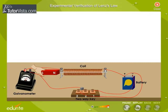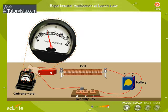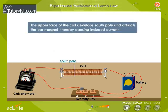Now remove the north pole of the bar magnet from the coil. The galvanometer needle moves towards the left, showing that the induced current is in the clockwise direction. In this case, the upper face of the coil develops a south pole and attracts the bar magnet, thereby causing induced current.